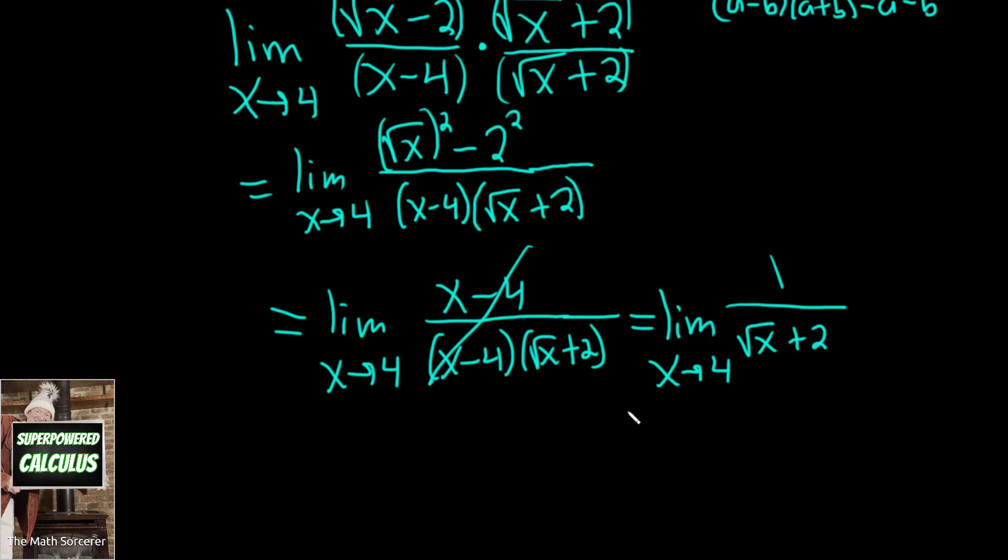All right, now we're in a good position, right? Because now we can plug in the 4, and we're not going to have that division by 0 that we had at the beginning of the problem. And that's the whole reason that we decided to rationalize, right? It was to clear that bottom term so we could plug in the 4 for all the x's. Now that we can do that, we drop the limit sign.